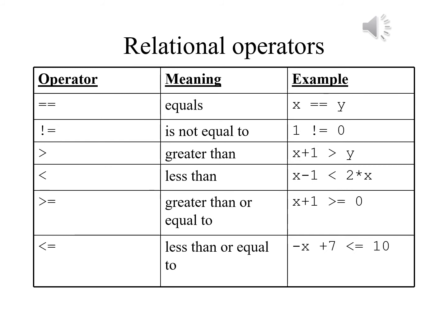Greater than or equal to, and less than or equal to, are a little more difficult. We have the greater than sign followed by an equal sign, or similarly the less than sign followed by an equal sign. That gives us >= or <=.